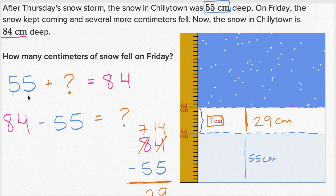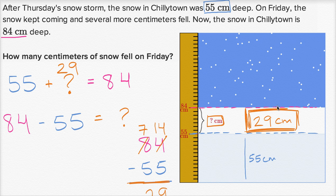And you can check that: 55 plus 29 is indeed equal to 84. So how many centimeters of snow fell on Friday? 29 centimeters. The important thing for problems like this is to imagine the story, imagine what's going on, draw diagrams if they didn't draw one for you, and then write math statements — number sentences or equations you know are true — so you can figure out what you don't know.